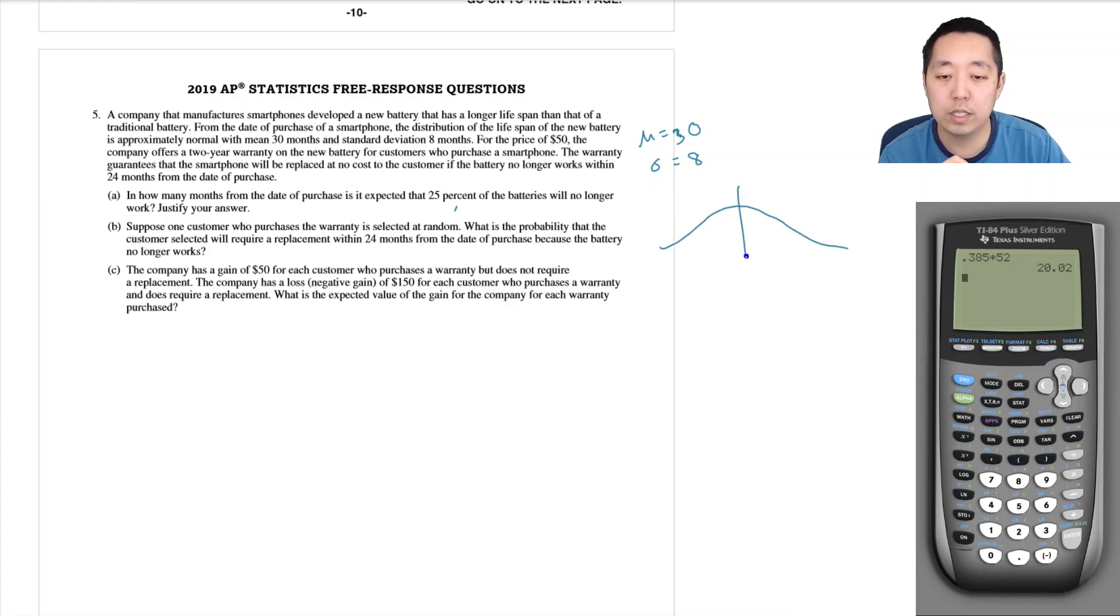Okay, so the mean is 30, standard deviation is 8, it's a normal curve, and they want to know after how many months is expected that 25 percent—so all of this area, this would be 25 percent.